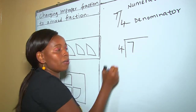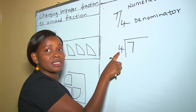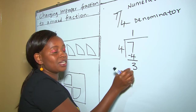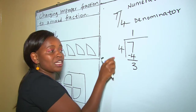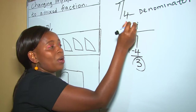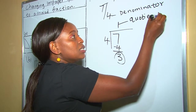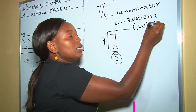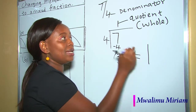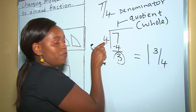7 divided by 4. It goes 1 time because of 4. 7 take away 4, it's 3. 3 cannot divide 4. Therefore, our remainder here, we write it as a fraction. That is, our quotient takes up the whole number, and our remainder becomes the fraction. Our answer shall be 1 — which is our quotient — and this 3 will become a fraction: 3 over 4.